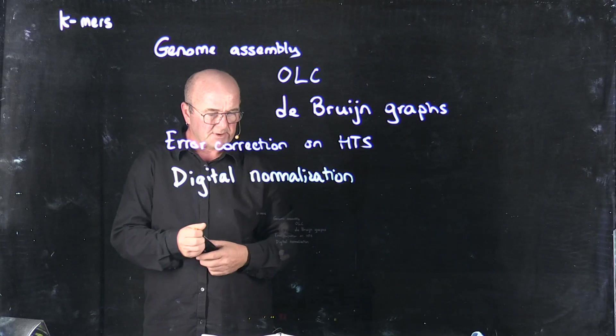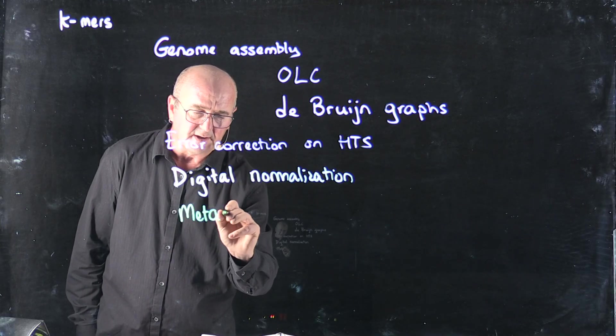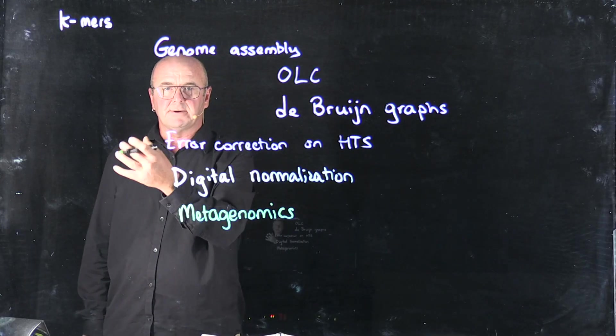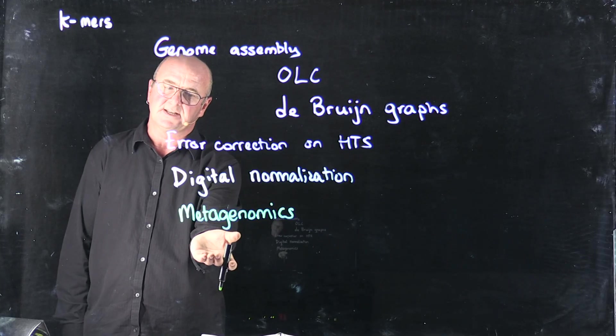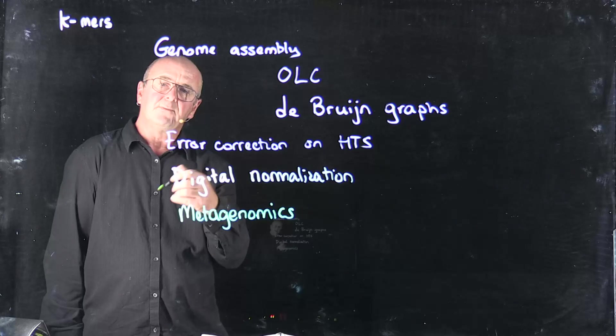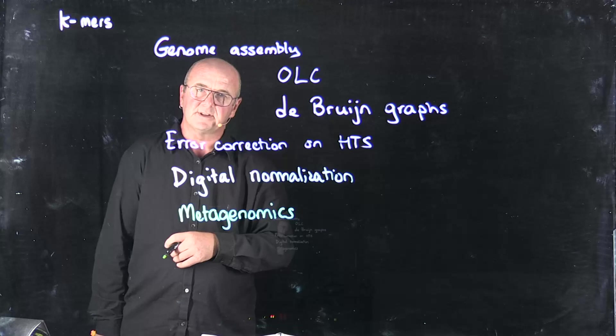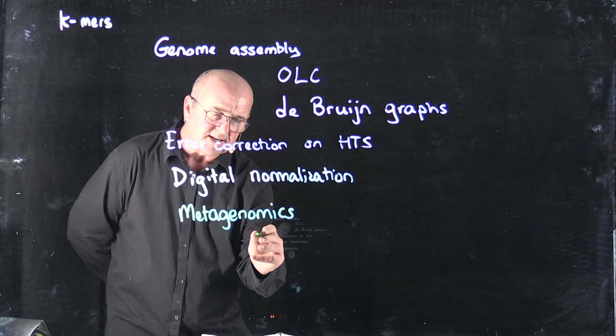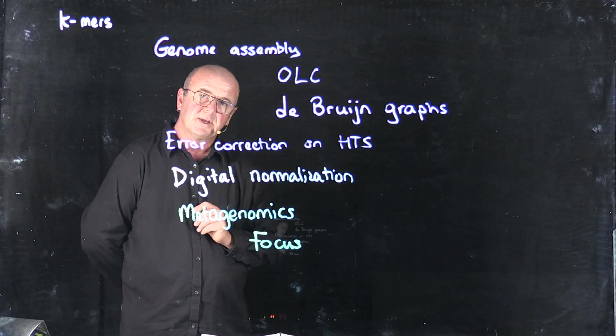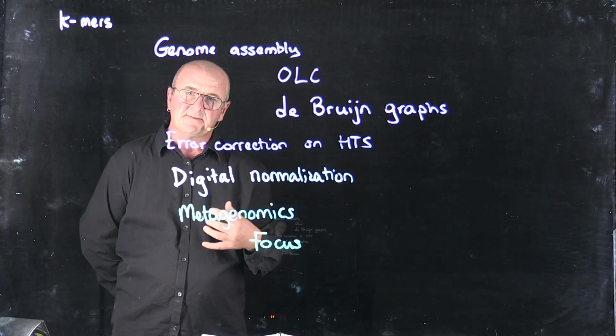In my group and in lots of other work that people have done, we've used K-mer counts to analyze metagenomics data. We can very quickly count K-mers and we can use the K-mers as basically a proxy for the organisms that are in the sample. For example, my group published a paper on a tool called Focus, which will take a random data set, count the K-mers in it very quickly, and we'll use that to identify the organisms that are there.